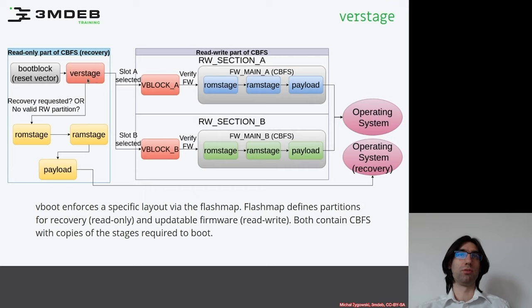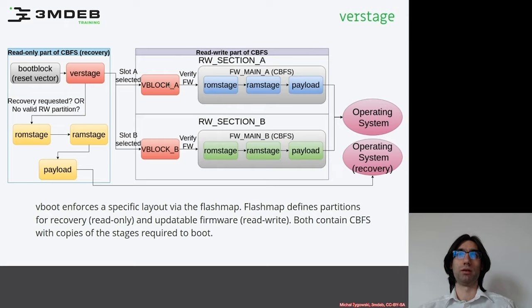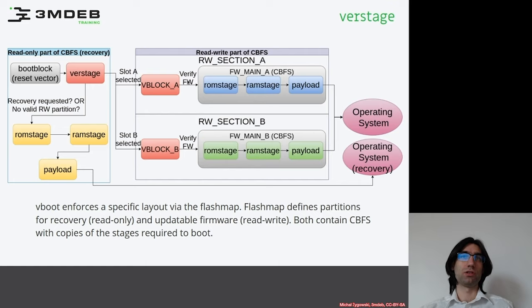The first stage is responsible for verifying the read-write parts of the firmware. The VBoot logic in the first stage checks VBlock A and VBlock B. First in order is slot A — it checks whether the signatures in VBlock A match the hashes calculated from the Firmware Main A partition containing the CBFS. If verification passes, slot A is marked as good and the first stage hands over control to the ramstage in that partition.